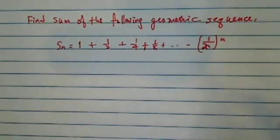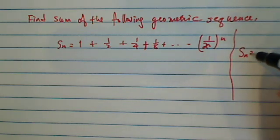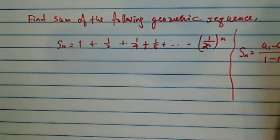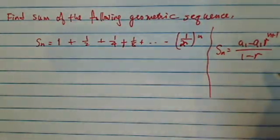Now obviously there is a big long hairy formula if you want to use it. It says the sum is equal to a1(1 - r^(n+1))/(1 - r). Let me shift it over here a little bit.